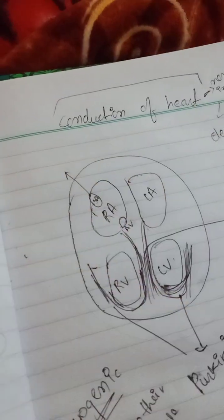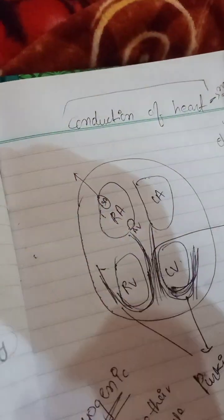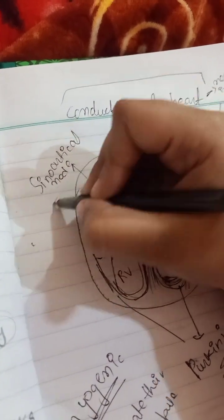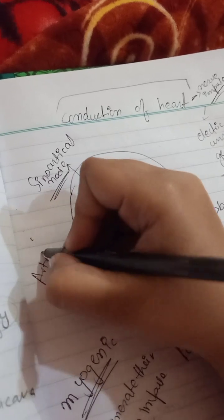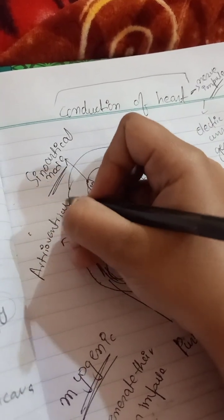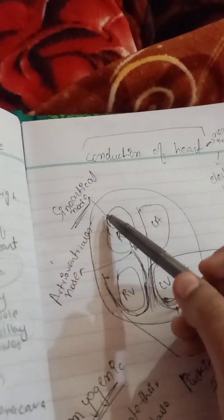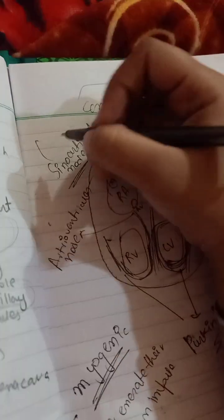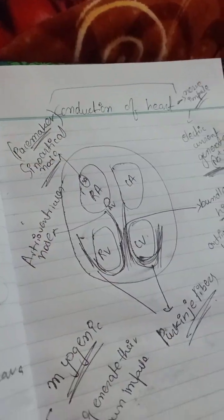The SA node is present in the right atrium on the upper side of the wall, and its full form is the sino-atrial node. The AV node is the atrio-ventricular node. The SA node is basically known as the pacemaker.